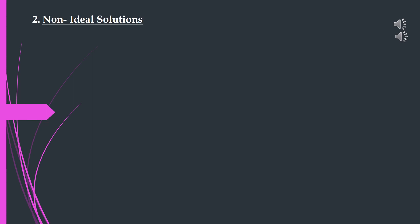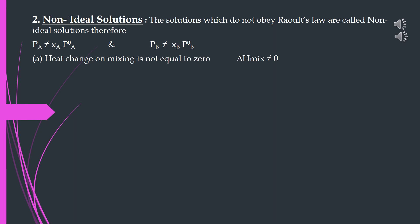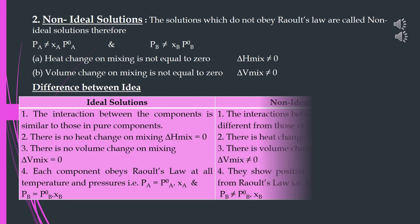Let's study non-ideal solutions. The solutions which do not obey Raoult's Law are called non-ideal solutions. Therefore, in this case, PA ≠ xA · P0A and PB ≠ xB · P0B. In the first characteristic, heat change on mixing is not equal to zero — ΔH mixing ≠ 0. And second, volume change on mixing is not equal to zero — ΔV mixing ≠ 0. That means there is either a decrease or increase in the volume of solution on mixing in case of non-ideal solutions. Here is the difference between non-ideal and ideal solutions.